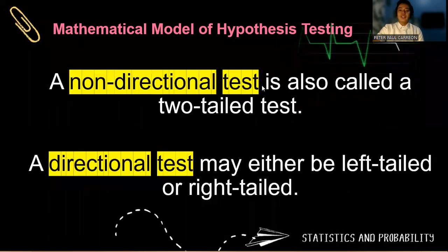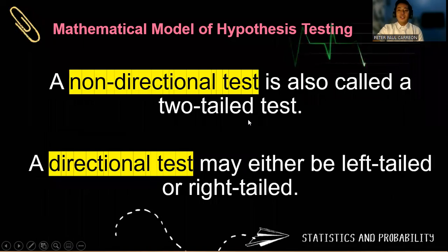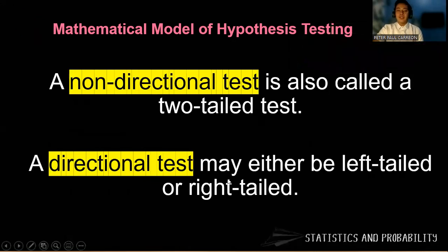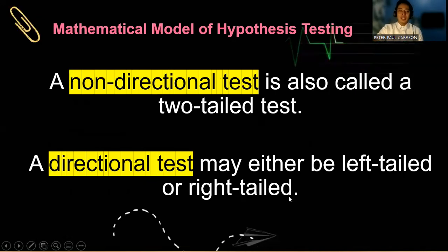So in a non-directional test, which is also called a two-tailed test, it gives us an idea that the researcher is not interested whether it is greater than or less than, but is just interested if there is no significant difference. However, if a researcher is interested whether it is greater than or less than, then it becomes a directional test. So the two possible directional tests are left-tailed or right-tailed, respectively.